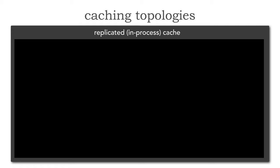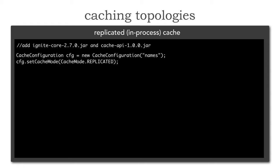Unlike the prior lesson with the distributed cache, we don't need to start an external server because there is no external server. This is what the code looks like in each of the services. First we add the various libraries needed — in this case Ignite Core 2.7 at the time of this recording, or any JARs or DLLs needed in addition. The first thing I'm going to do is create a new cache configuration called 'names', very similar to lesson 76. But in this case notice I set the cache mode to replicated — in lesson 76 I set it to local, here it's replicated.